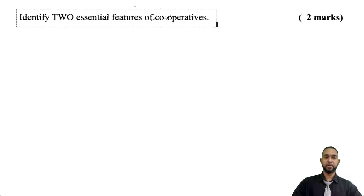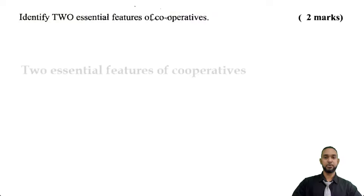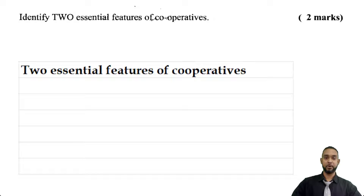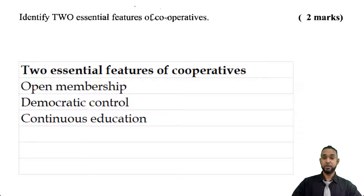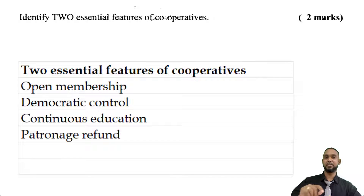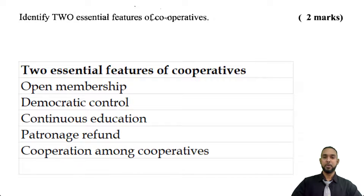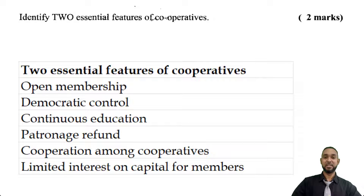A part 1 is asking us to identify two essential features of cooperatives. I'm going to give you a bit more than two. So we have open membership — anyone can join — democratic control, where everybody has an equal say, continuous education, patronage refund which is kind of like dividends to the members, cooperation among cooperatives, and limited interest on capital for members.